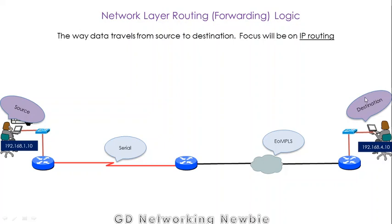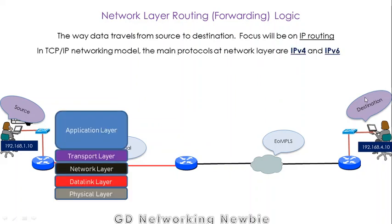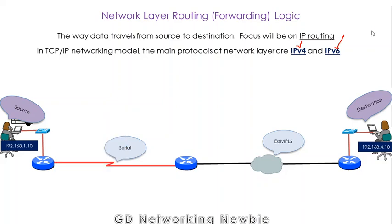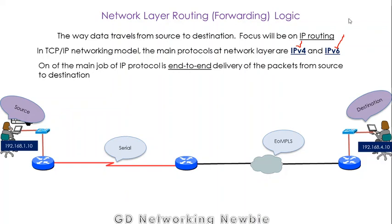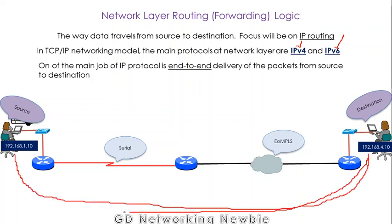During this discussion, our focus will be on IP routing. With respect to the TCP/IP networking model, the main protocols at the network layer are IPv4 and IPv6. This is the layer we are going to discuss, and these are the two most important protocols — IPv4 and IPv6.